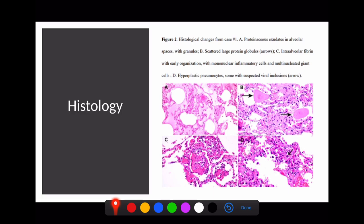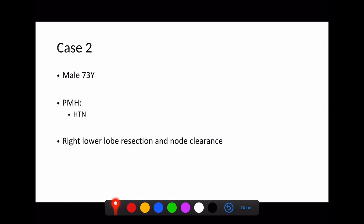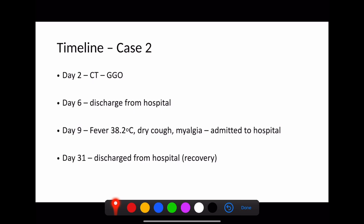Now, if we think about the second case here, which is a male 73-year-old who had a background of hypertension coming in for a right lower lobe resection and node clearance for an adenocarcinoma, they had a slightly different time course. Day one was classed as the day they came into hospital and had their surgery for resection of their tumor, which was diagnosed at another hospital. Day two, they'd done a CT scan, and this showed evidence of ground glass shadowing. The really interesting thing is this patient recovered really well, so much so that by day six after the surgery, they were discharged from hospital, feeling absolutely fine. So again, we're seeing this asymptomatic period.